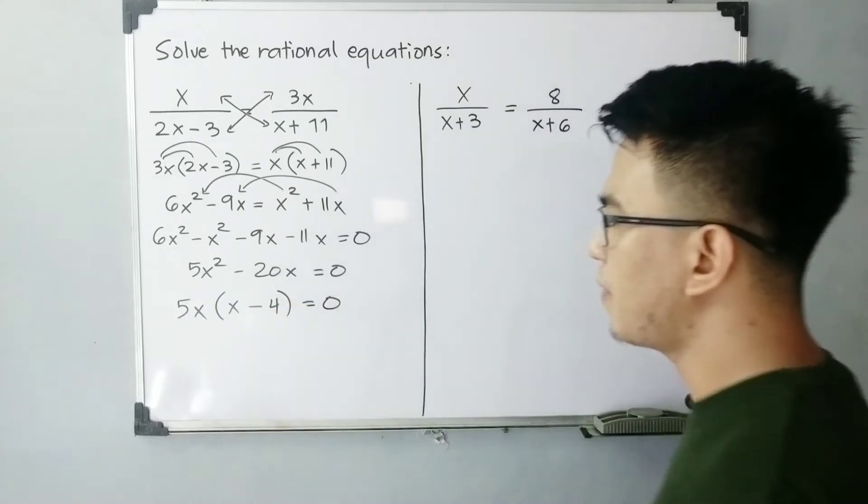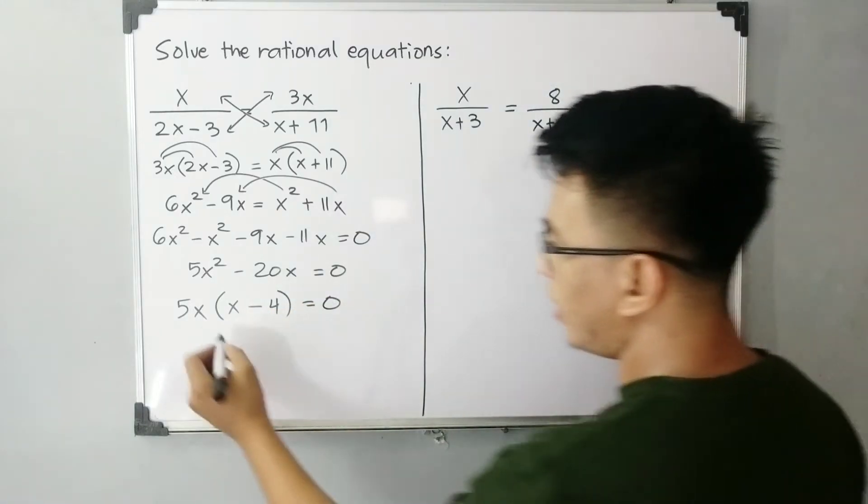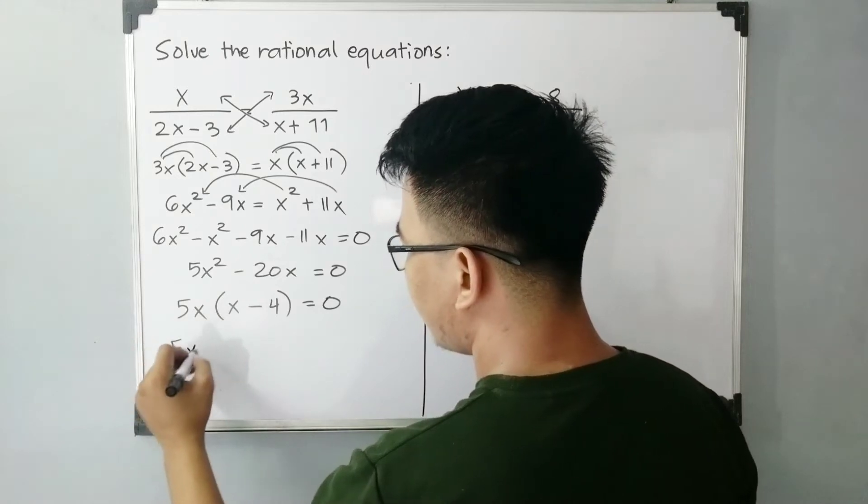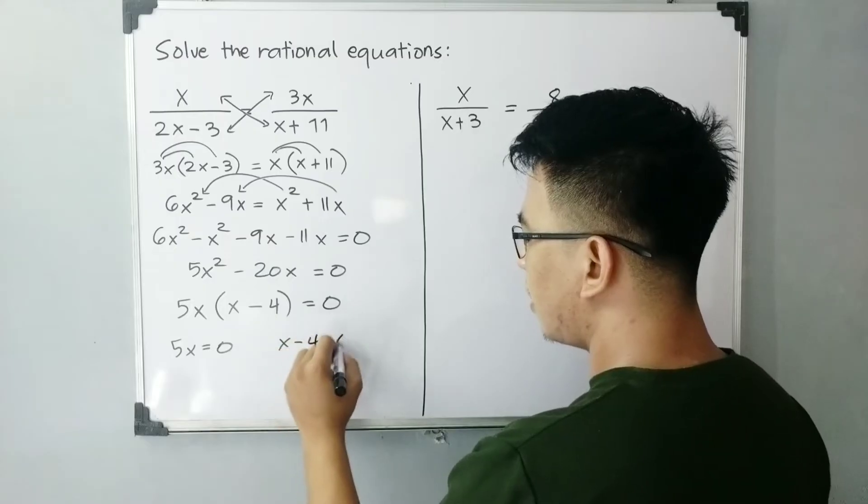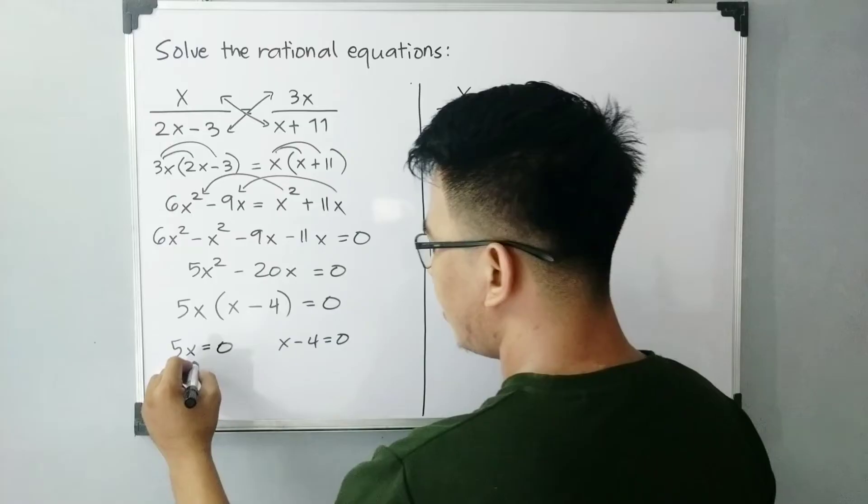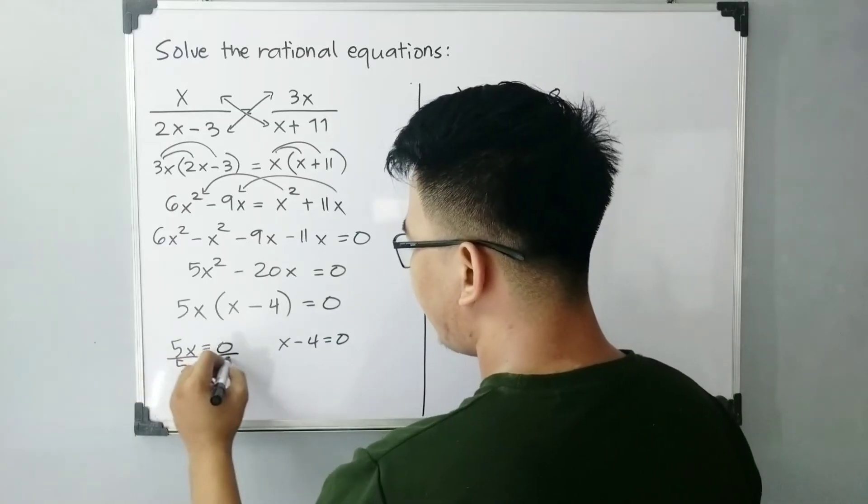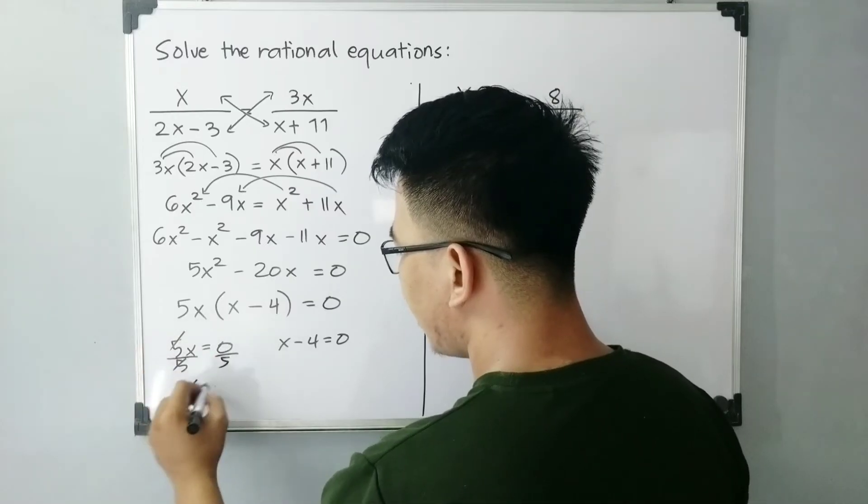Now to solve for the value of x, equate this one by 0. So 5x is equal to 0. While the other factor, x minus 4 is equal to 0. So solve this, divided by 5, divided by 5, x is equal to 0.